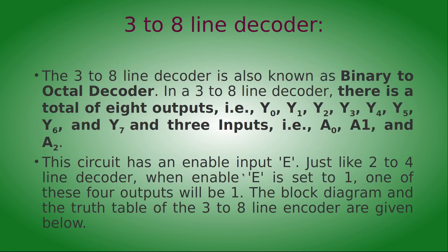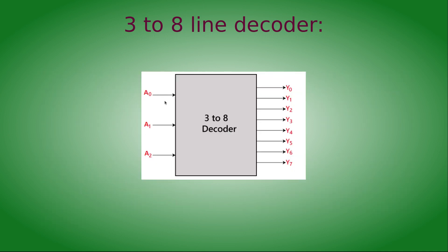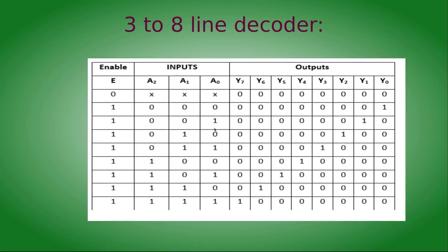Next is the three-to-eight line decoder. It consists of three input lines and eight output lines. This is called a binary-to-octal decoder because the three-digit binary number is converted into an octal number. Octal numbers consist of digits zero to seven, so the outputs are represented as Y0 to Y7. The enable input E is also available here.